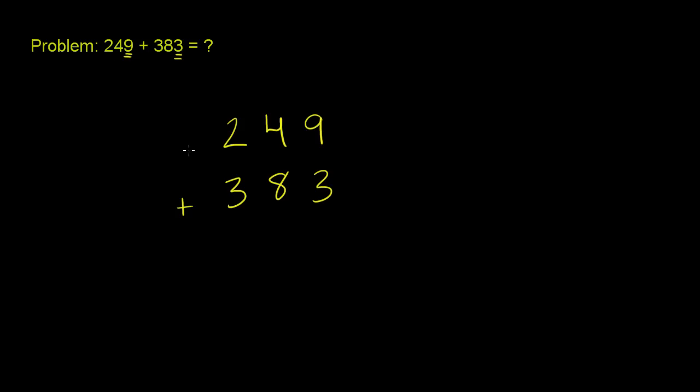If you had a thousands place in one of them and not in the other, it would just kind of be sitting out here by themselves. The easiest thing is just to kind of both make them line up to the right, or the ones place.